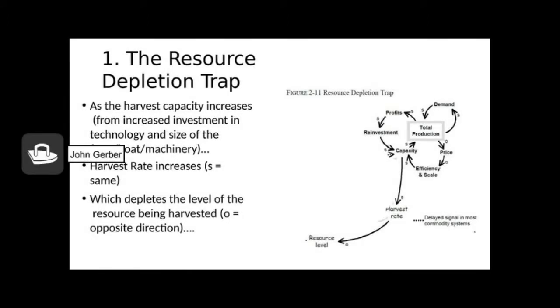Here we begin to look at the resource depletion trap. All production systems depend on some kind of a resource. For coal mining it's the coal underground, for lumber it's trees in the forest, for food and farming it may be soil and water. You can see from this system as you increase in capacity we generally increase the harvest rate moving in the same direction. As you increase the harvest rate the resource level whether that be soil, water, air, clean air, or fish in the sea will decline.